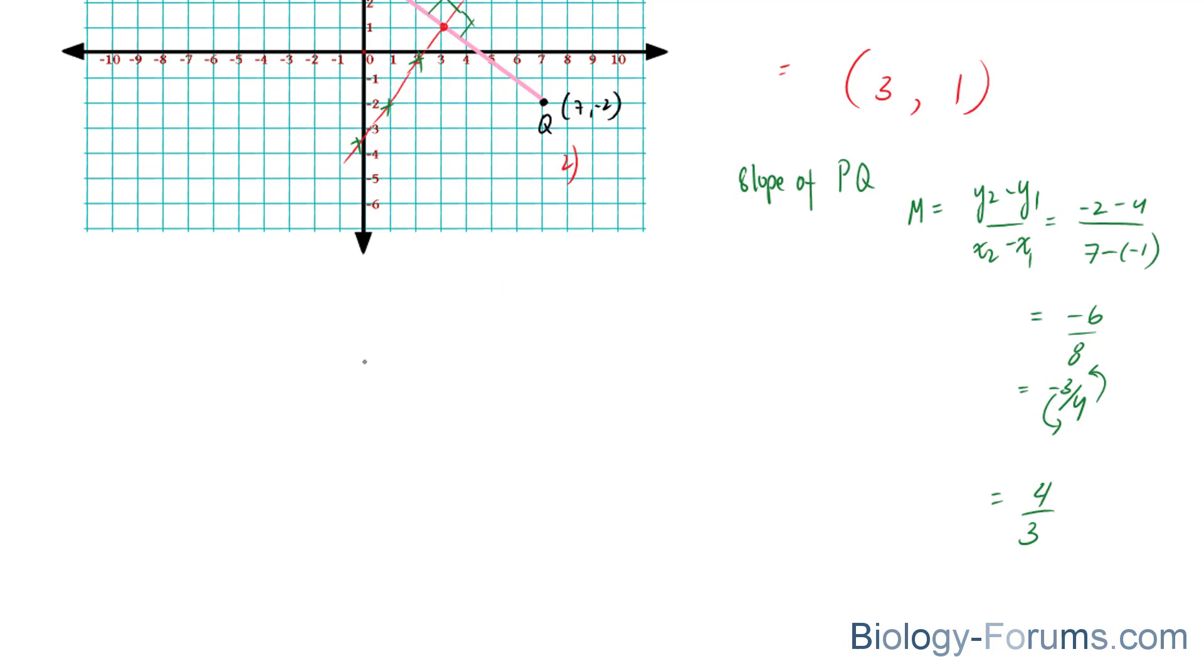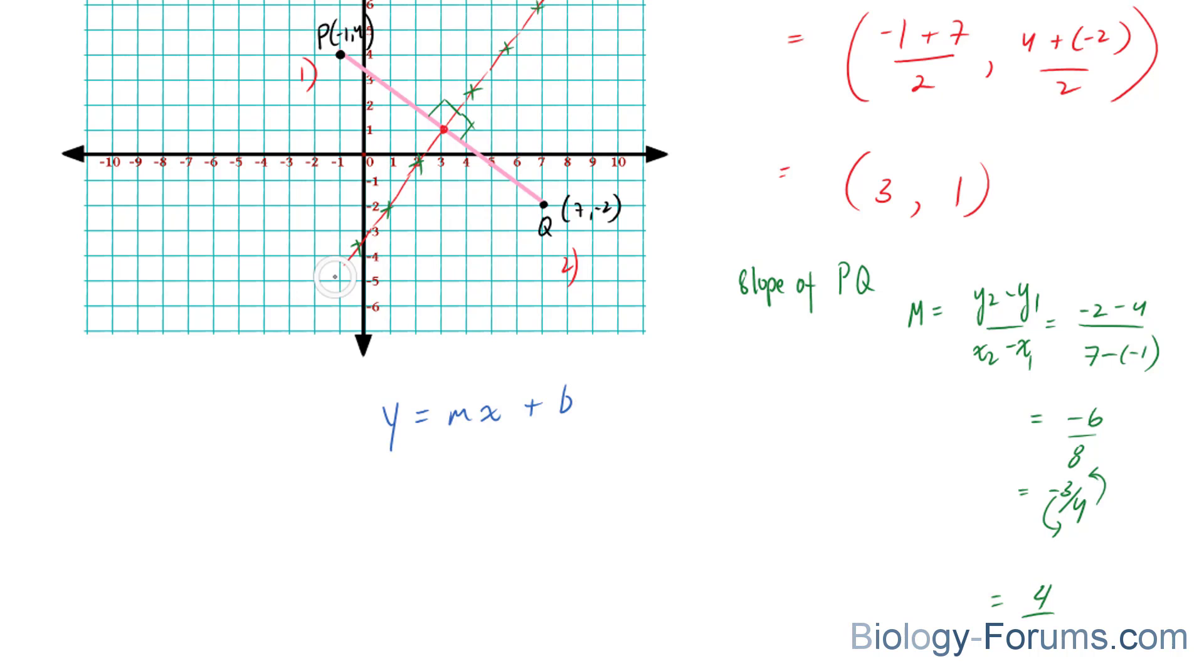The template for a straight line equation is y is equal to mx plus b. And this equation right here that we'll create will model this red line. The slope is 4 over 3, so I'm going to replace this m with 4 over 3 plus b.